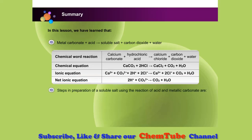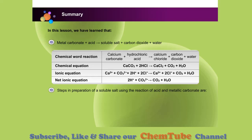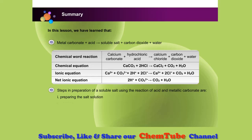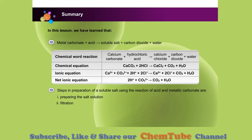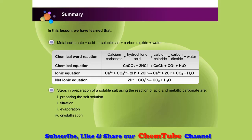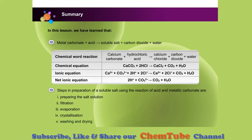Steps in the preparation of a soluble salt using the reaction of acid and metallic carbonate are: 1. Preparing the salt solution, 2. Filtration, 3. Evaporation, 4. Crystallization, 5. Washing and drying.